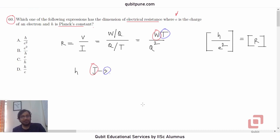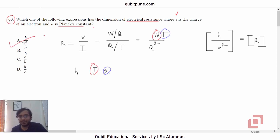H upon E squared is the correct option, and that is option A. So question 60, the last question from SRF 2021 in physics — the answer is option A.